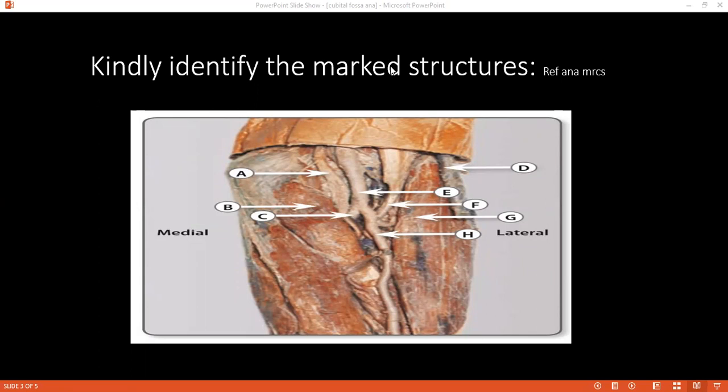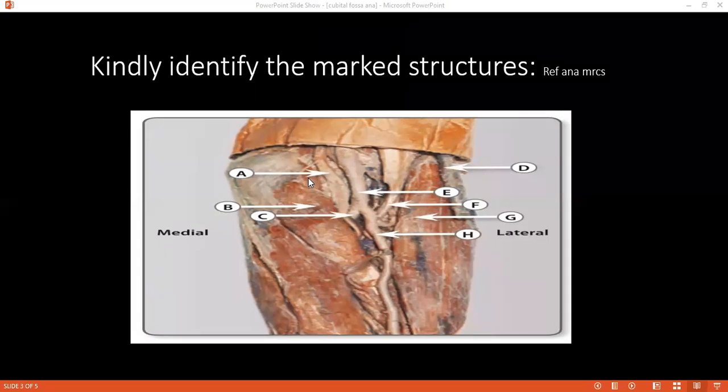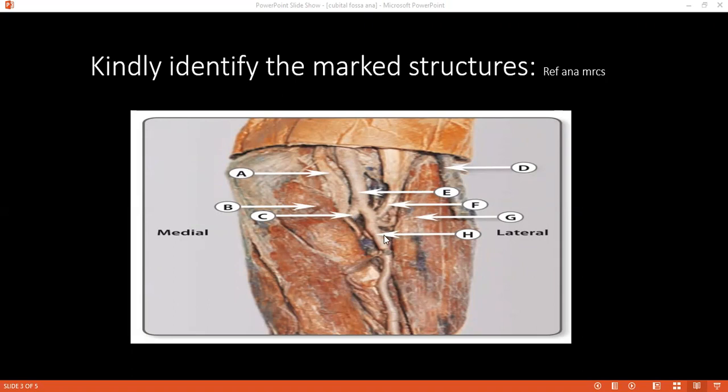Can you identify the structures from A to G? A is median nerve, B is pronator teres muscle. C? E is brachial artery, which divides into ulnar and radial arteries. Is that right? C and A.